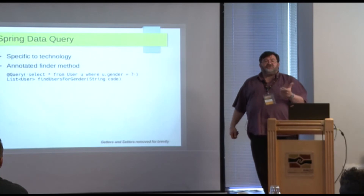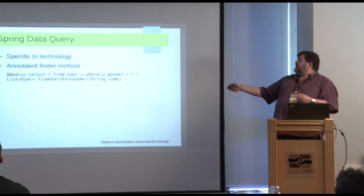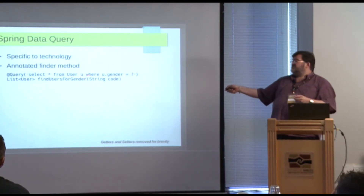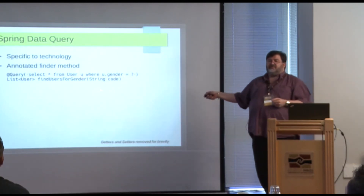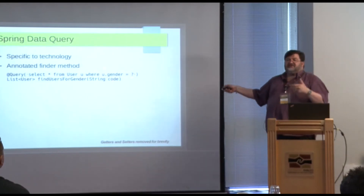If you want to provide your own query, you can annotate with @Query and then provide a technology-specific query string. Obviously in this case, this will only work with JPA. If you are using Mongo, then you will have to provide a Mongo query, which is a weird-looking JSON string. In this case, the implementation will substitute the predicate for this query because you've provided the query.